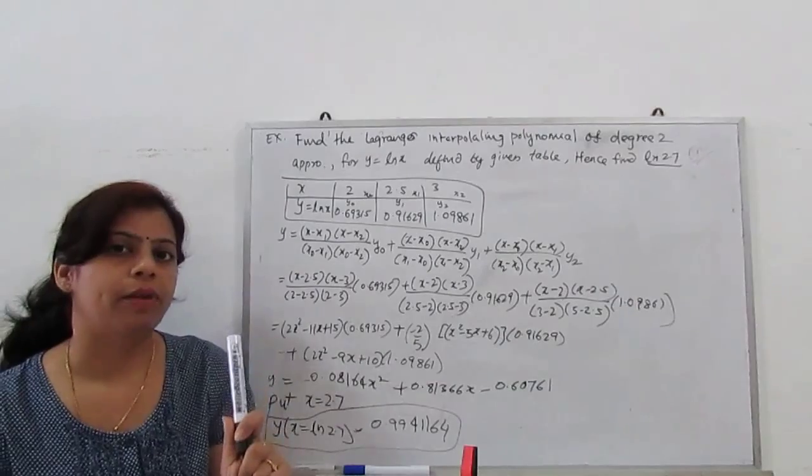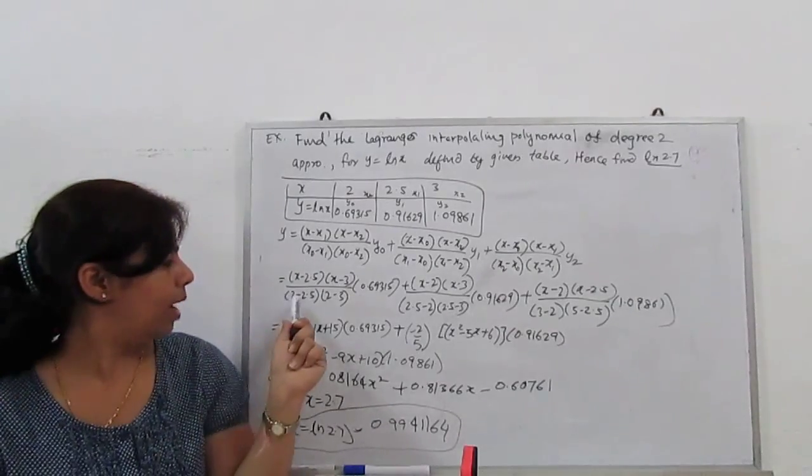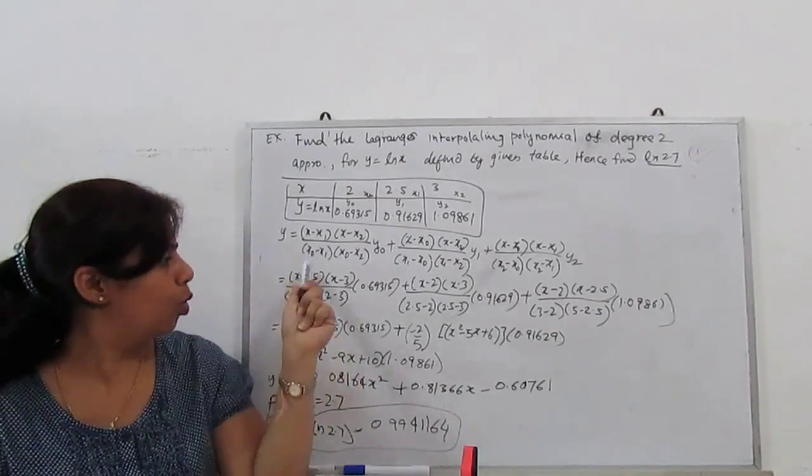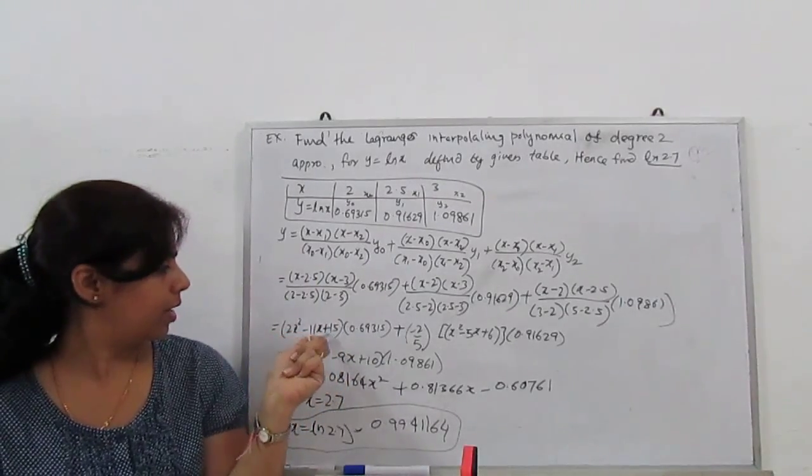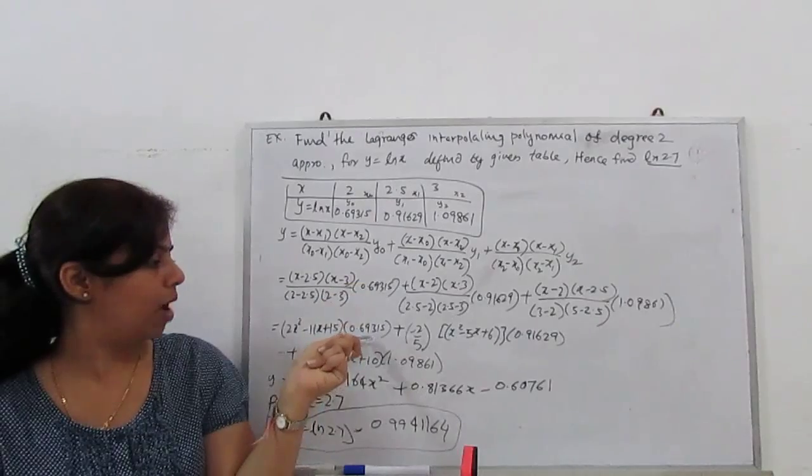When you multiply, denominator becomes 0.5. This is minus 0.5, this becomes 1. 0.5 is 1/2. Minus minus plus 1/2, 2 goes up.